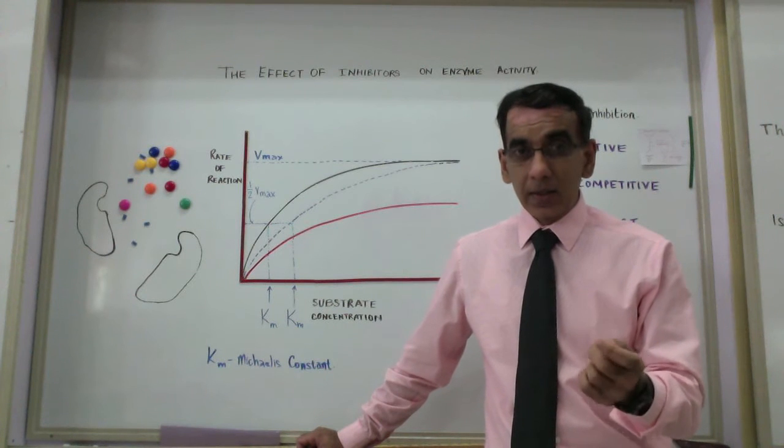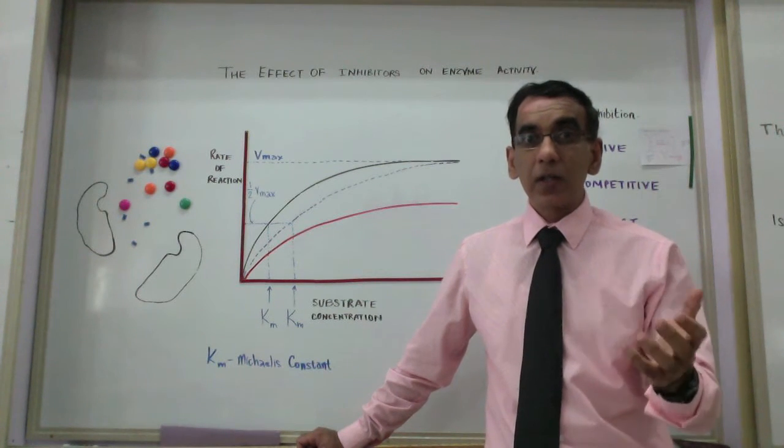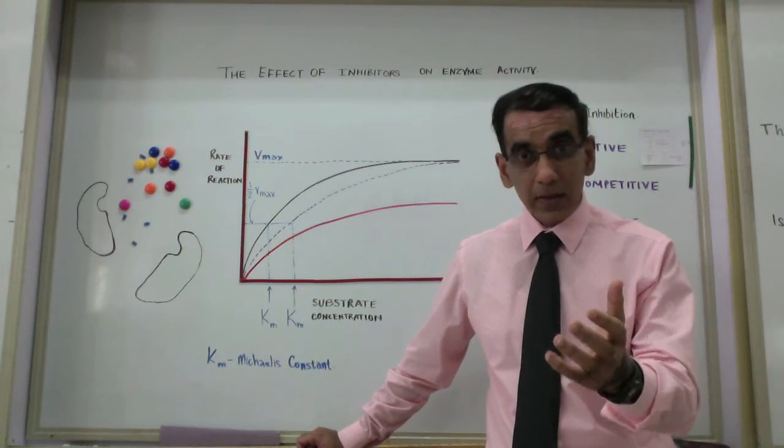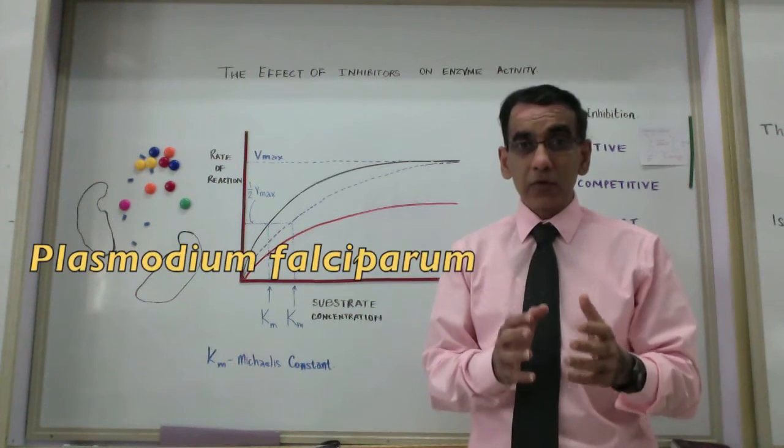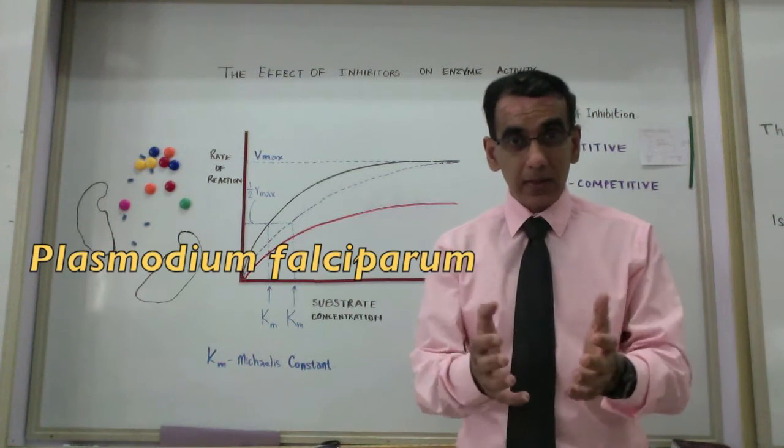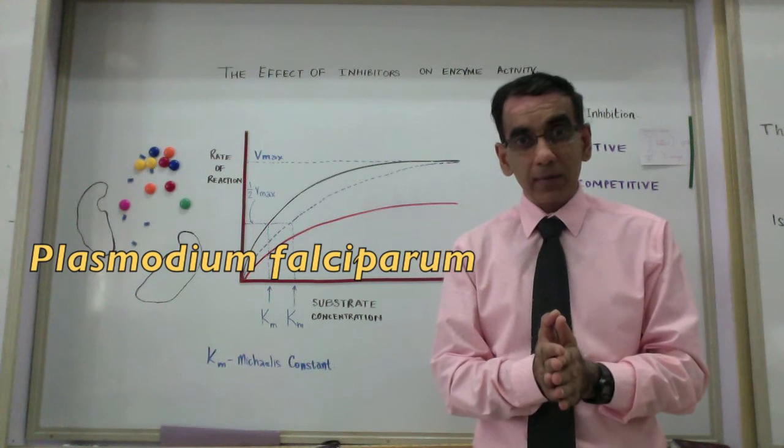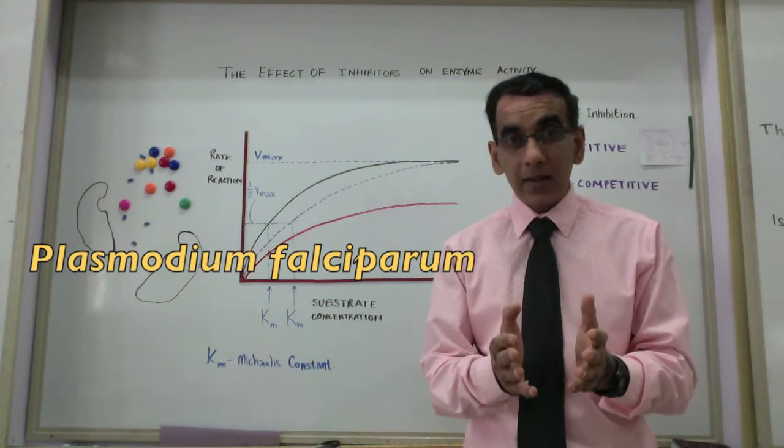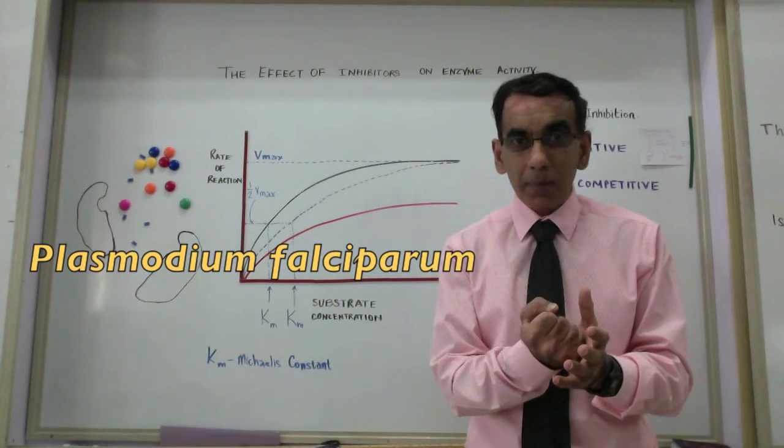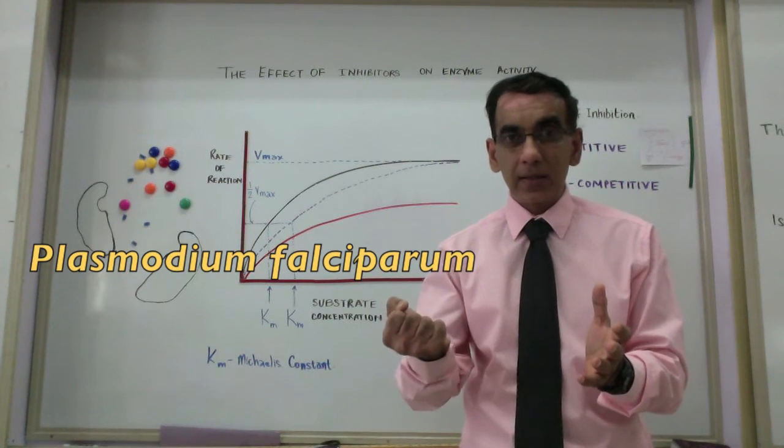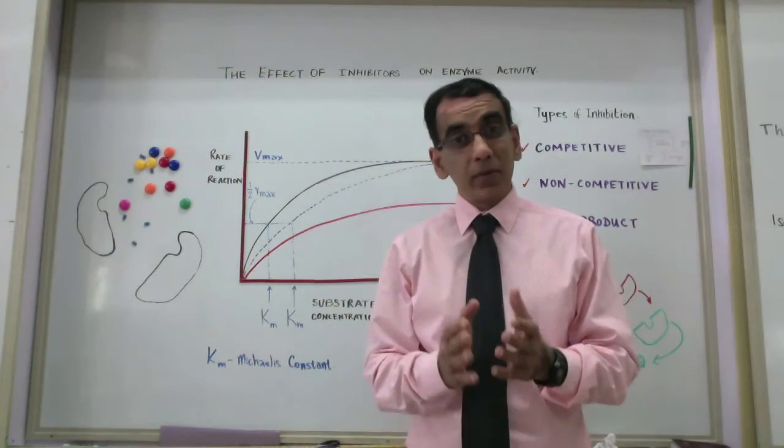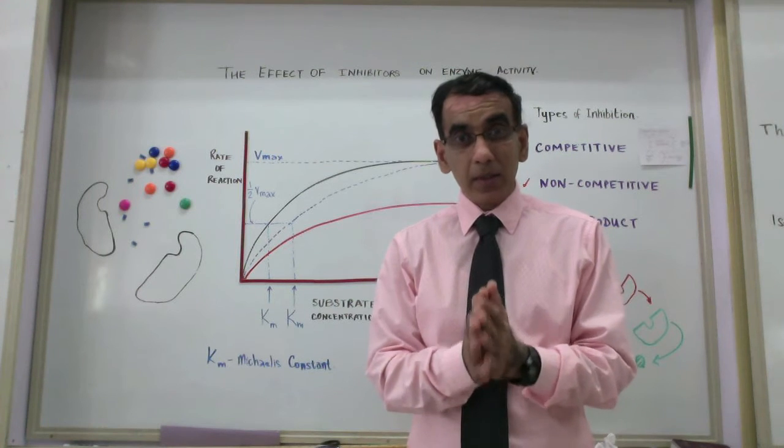It mutates itself. It's constantly in a struggle for existence with the drugs that humans use to treat it. These drugs that are used to treat malaria caused by Plasmodium falciparum are inhibitors. They seek to disrupt biochemical pathways in the organism with the aim of providing relief from the symptoms of malaria.